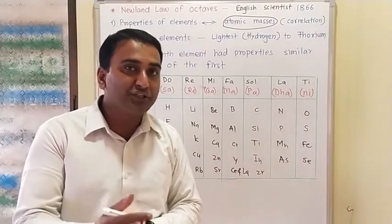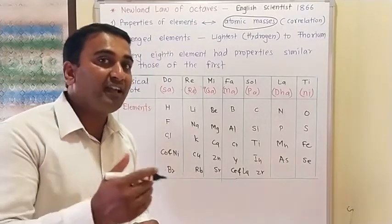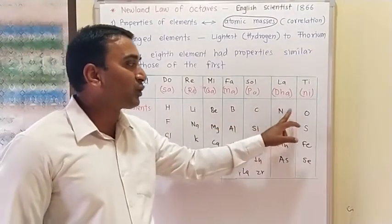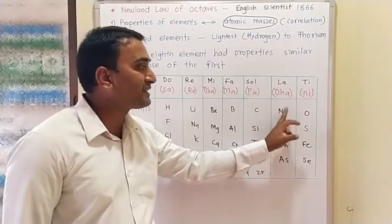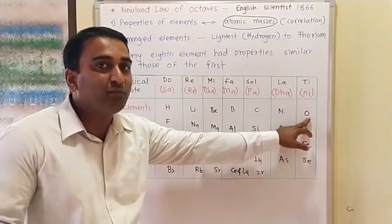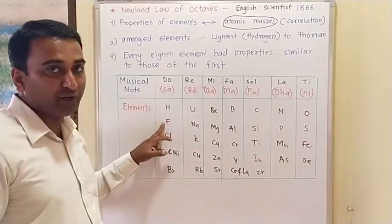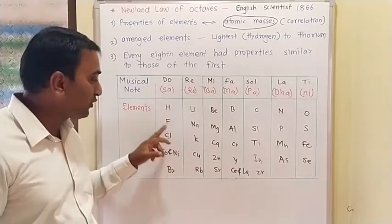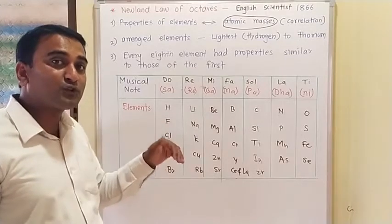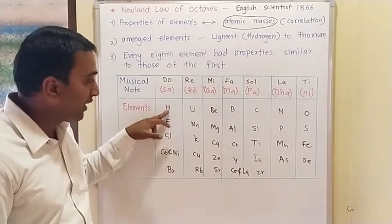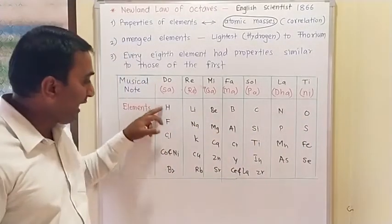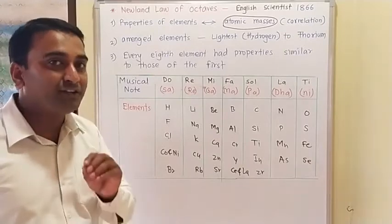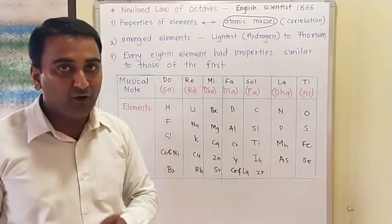He found a repetition in properties after every 8th element. The elements in order are: hydrogen, lithium, beryllium, boron, carbon, nitrogen, oxygen — that's seven — and the 8th element after oxygen with a slightly higher atomic mass is fluorine. He found the 8th element had similar properties to the first. So hydrogen and fluorine should have the same property — that was Newland's assertion. This law is called Newland's Law of Octaves.